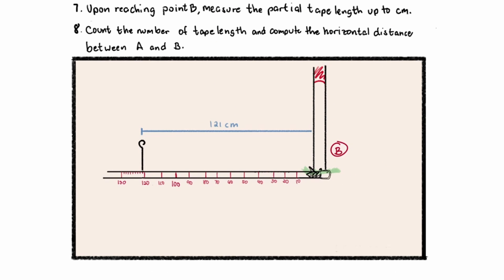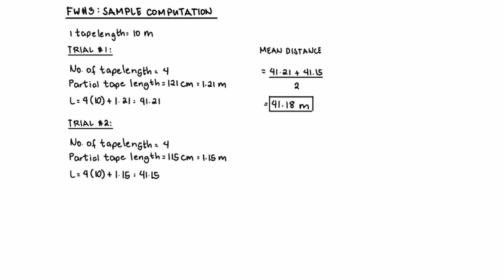And then the last step is to count the number of tape lengths that you have as well as your partial distance. And then compute the horizontal distance between A and B. And then repeat the entire procedure for how many trials is required. So if your tape length is less than 10, you can just count it manually. If it's more than 10, then you may use the pebble method. So to compute for our datasheet, the solution is almost the same as your fieldwork number 2.